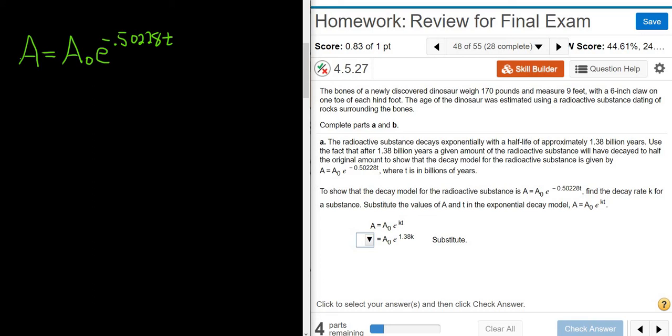And if you plug in the half-life into this formula here, if you plug in T equals 1.38, well, this is how much you have after T years. But after 1.38 years, you should have half of what you started with. So this should be equal to half of A sub 0.